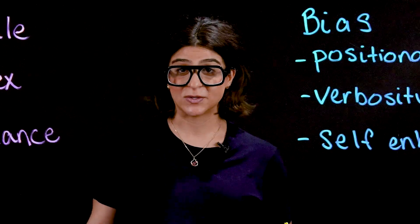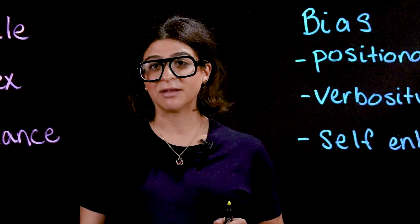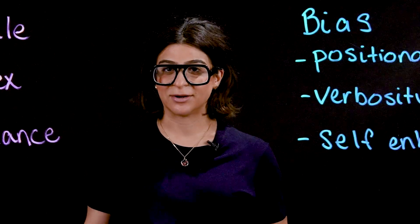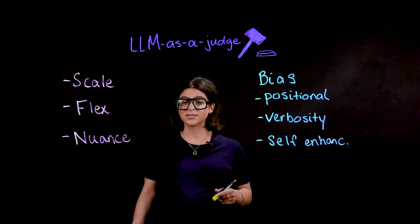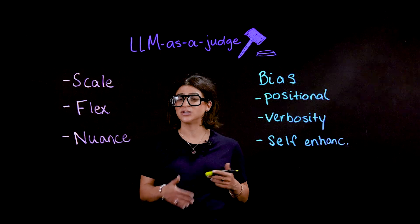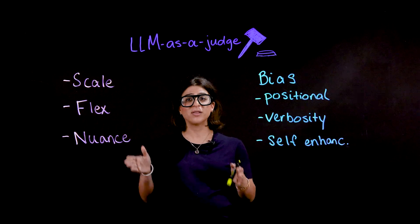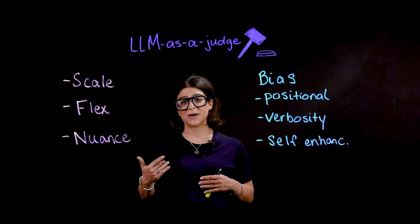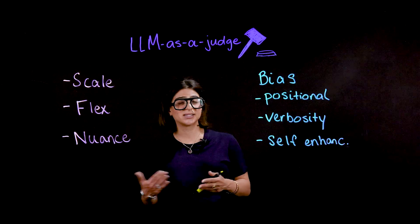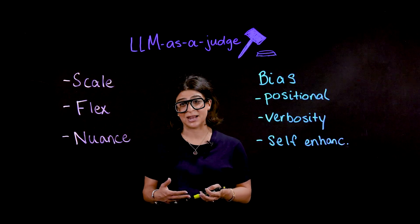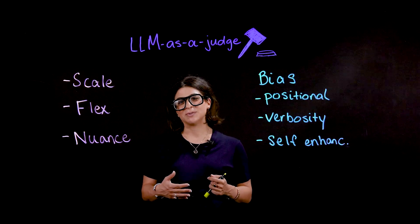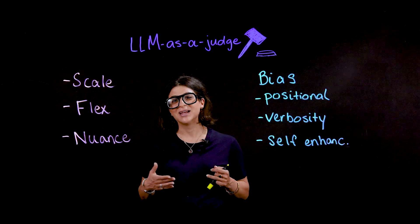These biases can skew your results — a model can favor an output because it's longer or because it's in a particular position, but it's not necessarily better. But good frameworks are built to catch these mistakes. For example, you can run positional swaps and see if the judgment changes — moving an output from position A to position B and seeing if the model's selection changes. Bias in LLMs doesn't mean the system is completely broken; it just means you need to stay vigilant. So if you're tired of manually evaluating output, LLM as a judge might be a good option for scalable, transparent, and nuanced evaluation.